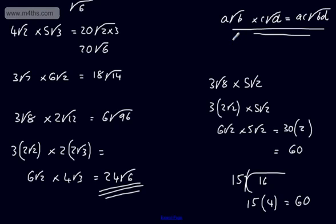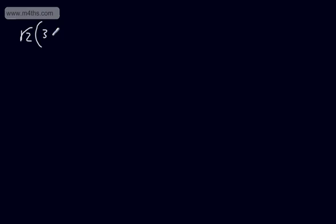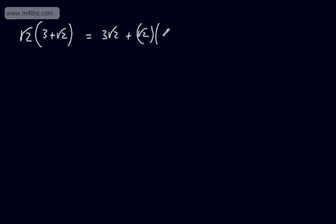Let's move on and look at brackets. Sometimes we might be asked to expand and simplify. So let's take root 2 multiplied by the quantity 3 plus root 2. As before, we multiply the outside by the inside: root 2 times 3 is 3 root 2, and then root 2 multiplied by root 2. Root A times root A is A, so we get 3 root 2 plus 2. Don't put 3 root 2 plus 4 — that seems to be a common error. It's just 3 root 2 plus 2.